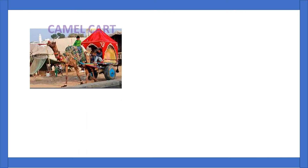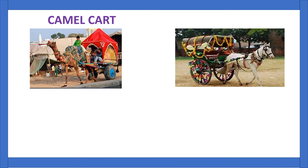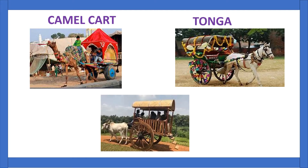In olden days, people used animals to go from one place to another. Here you can see a camel cart, a tonga which is driven by a horse, and a bullock cart. Can you tell which type of transport these come under? Yes, you are right — land transport. Camel carts, tongas, and bullock carts come under land transport.